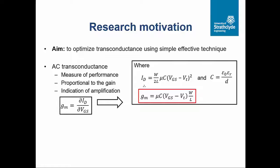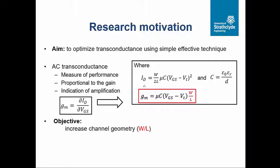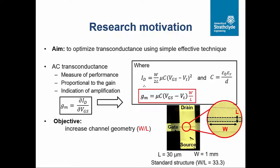We can increase the mobility, but that is usually quite complex — it requires complex fabrication processes. The capacitance is limited by the relative permittivity and also the thickness of the dielectric. A decrease in the gate-source voltage decreases the drain current. So, the last parameter we're going to be looking at today is the channel width-to-length ratio W/L. What we can do is increase this parameter. Here's a standard structure of the transistor — it's a rectangle shape with W of 1 millimeter and L of 30 micrometers, giving a typical W/L ratio of about 33.33. What we want to do is increase this value from 33 to a value where we can get a high transconductance.